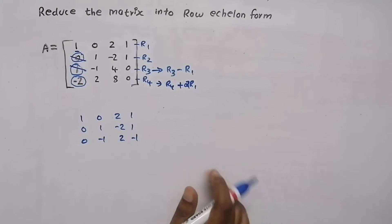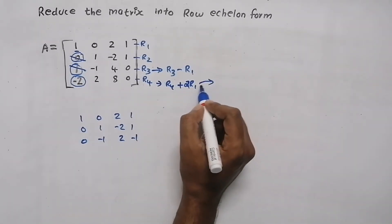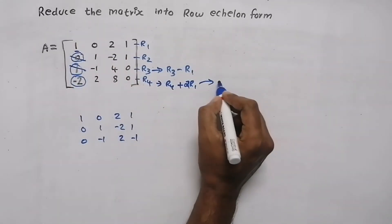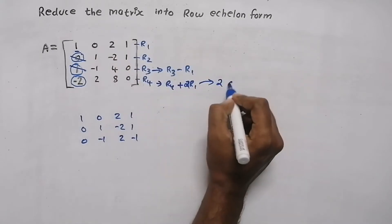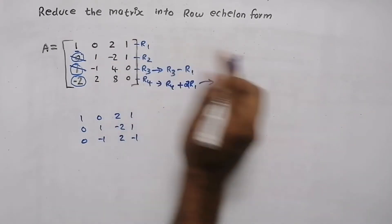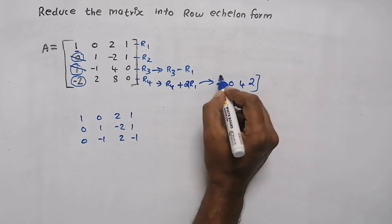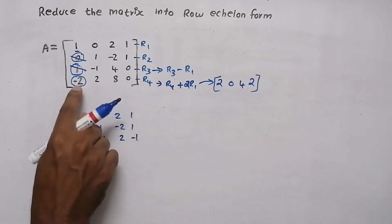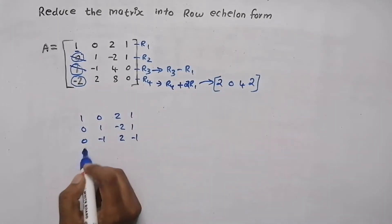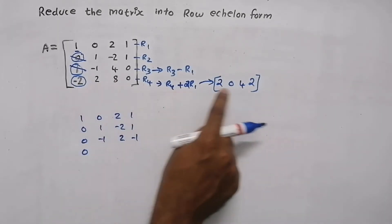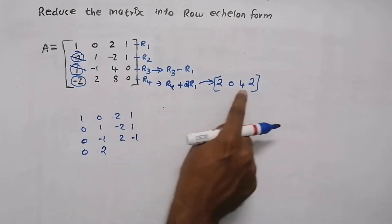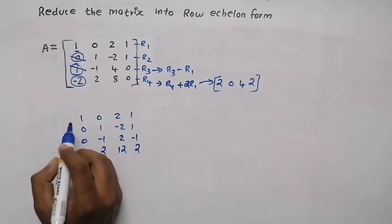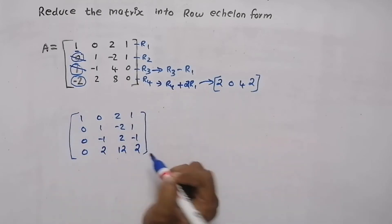To avoid confusion in calculation, write 2R1 separately: 2 into 1 = 2, 2 into 0 = 0, 2 into 2 = 4, 2 into 1 = 2. Now add the fourth row with this: minus 2 plus 2 = 0; 2 plus 0 = 2; 8 plus 4 = 12; 0 plus 2 = 2. So this is the new matrix we are going to get.